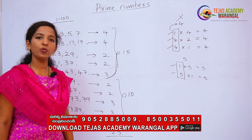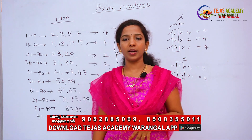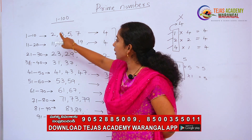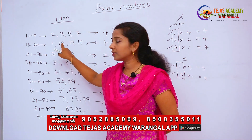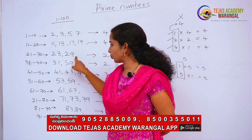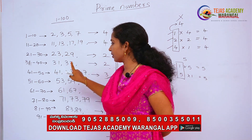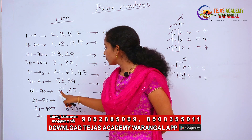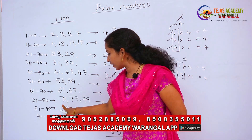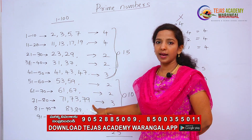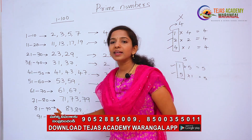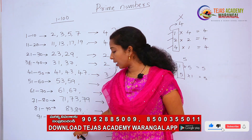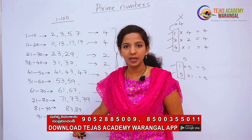The complete list of prime numbers between 1 and 100 is: 2, 3, 5, 7, 11, 13, 17, 19, 23, 29, 31, 37, 41, 43, 47, 53, 59, 61, 67, 71, 73, 79, 83, 89, and 97.